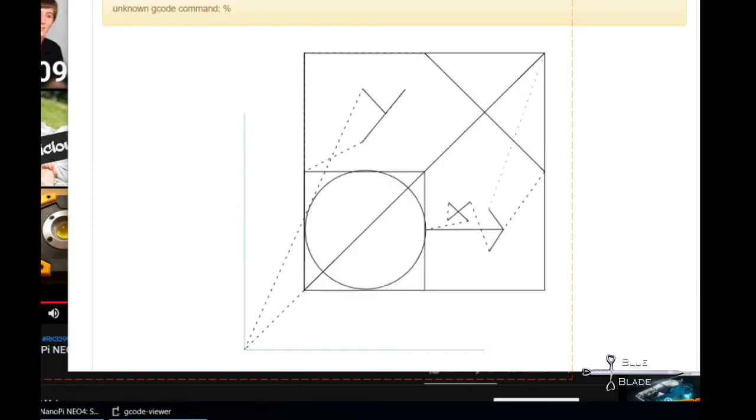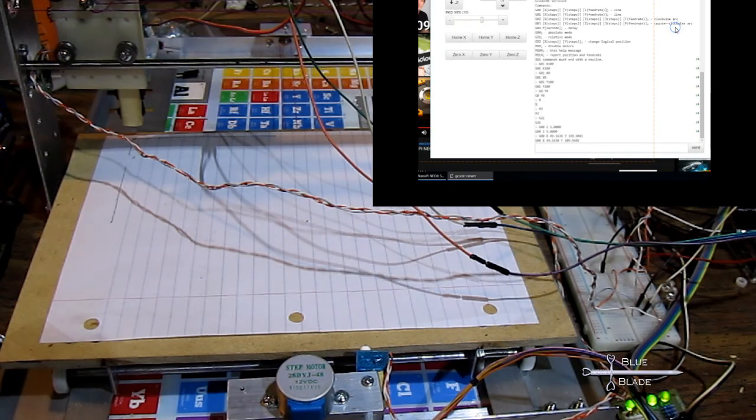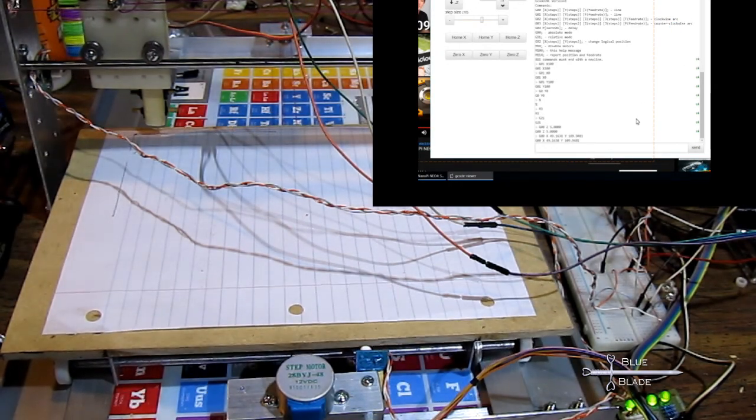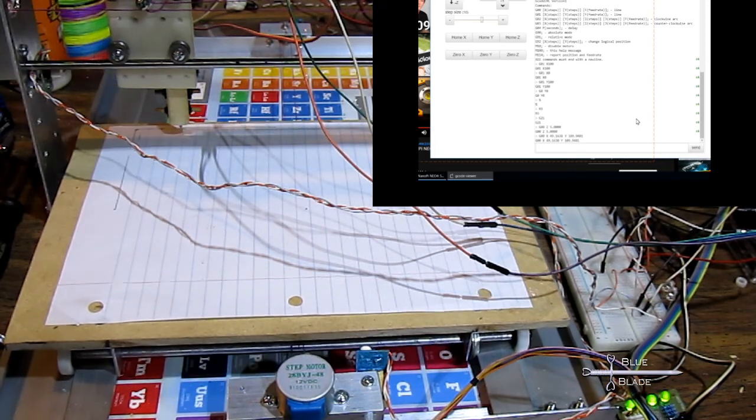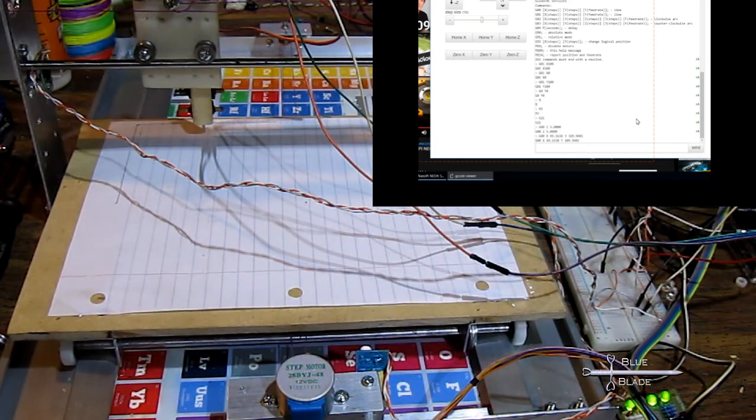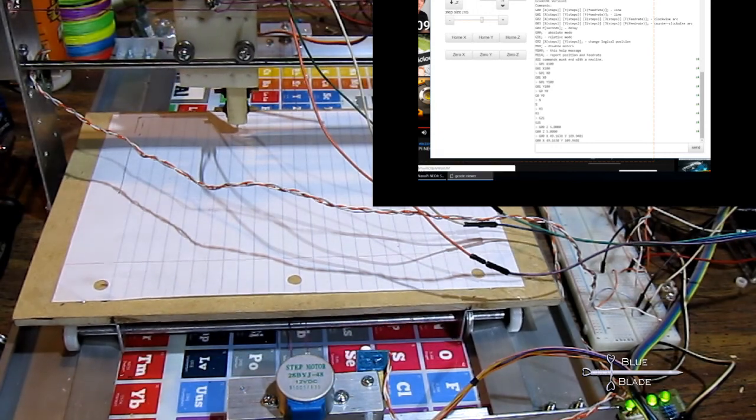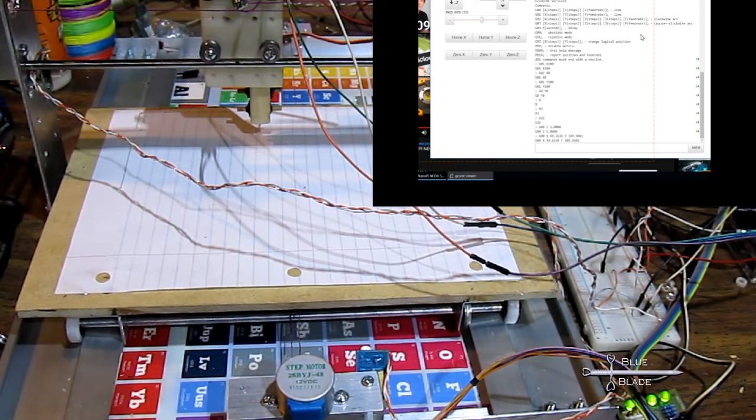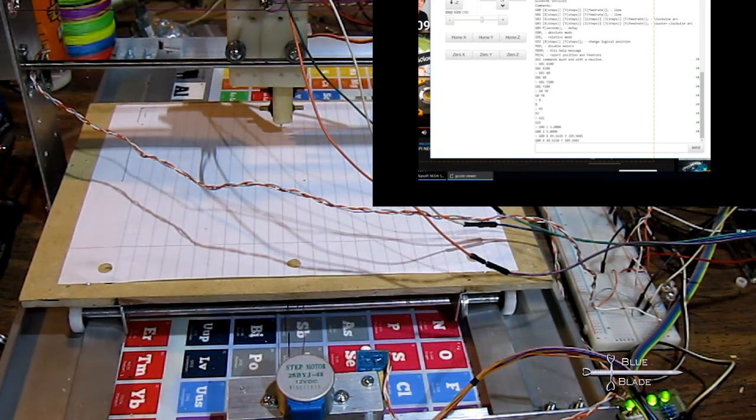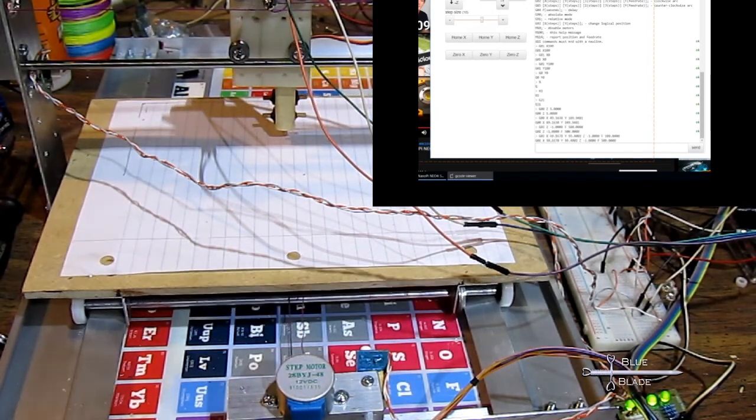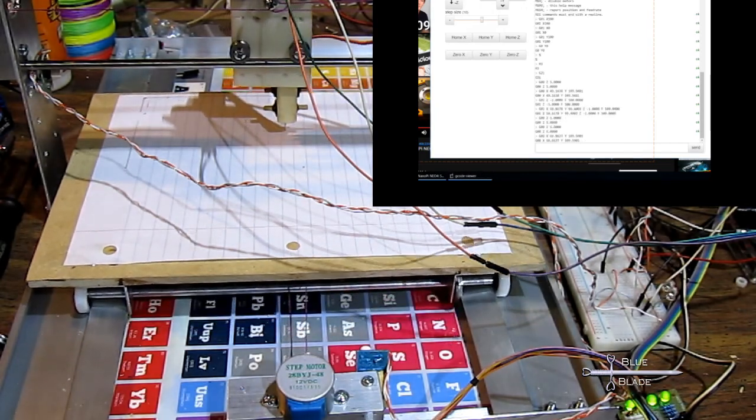For now, I'm just using the Google Chrome G-code Sender plugin to send the data from my PC to the Arduino over USB. To do so, open the plugin, go to Load File, click Open Local File, and then select the file we created with Inkscape. You should see it in the preview. Once ready, click Send a Machine to start printing. Here we go! I'll speed this up a bit.